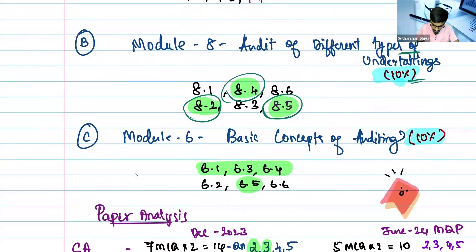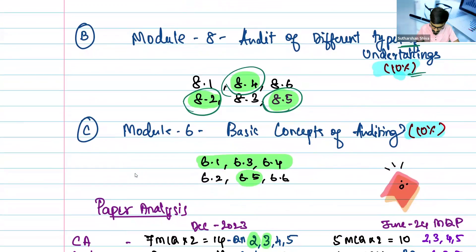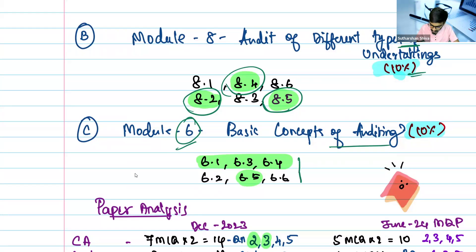Then the C category is module 6 — Basic Concepts of Auditing. Revise it in this order: 6.1, 6.3, 6.4, then 6.2, 6.5, and 6.6. This is what you need to go through for the auditing section.